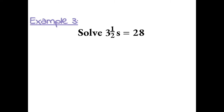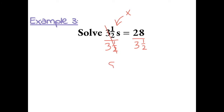Example 3: solve 3½s equals 28. We want to solve for s by getting it by itself. Since 3½ is being multiplied with s, the inverse operation is to divide. So we divide by 3½ on both sides of the equal sign to keep the equation balanced.